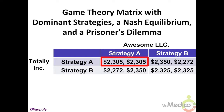Therefore, the Nash equilibrium is the cell where both firms play Strategy A. We know that each firm will earn $2,305 when they play their dominant strategies. As long as one firm has a dominant strategy, you can find the Nash equilibrium.